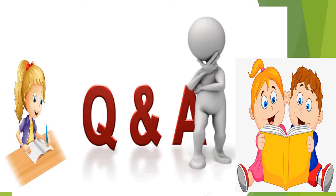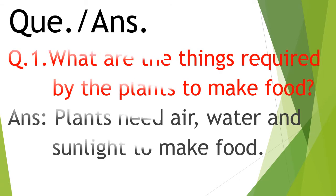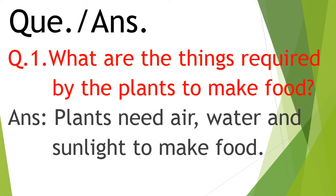Now let's learn and practice some question answers of types of plants. Question number 1: What are the things required by the plants to make food? Answer: Plants need air, water and sunlight to make food.